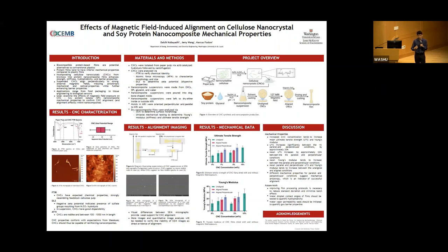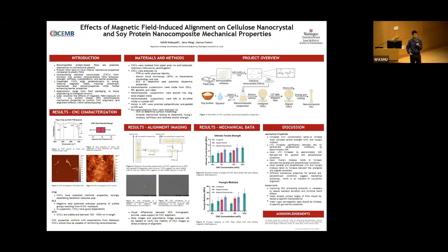Because much biological tissue is anisotropic, this would allow us to use these nanocomposite films in tissue engineering applications such as cell scaffolds. Food packaging with enhanced barrier properties is another application. This summer I worked on aligning cellulose nanocrystals in a soy protein isolate matrix and creating nanocomposite films with anisotropic properties. The key questions were: can we align these cellulose nanocrystals, how do we verify alignment, and how does it affect the mechanical properties of the resulting nanocomposite film?